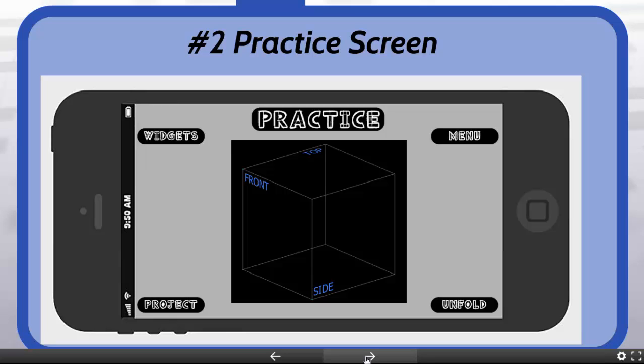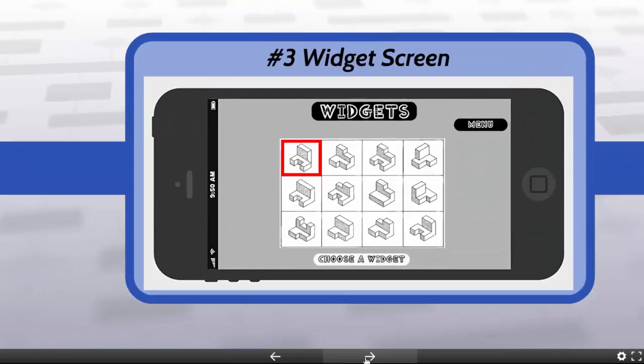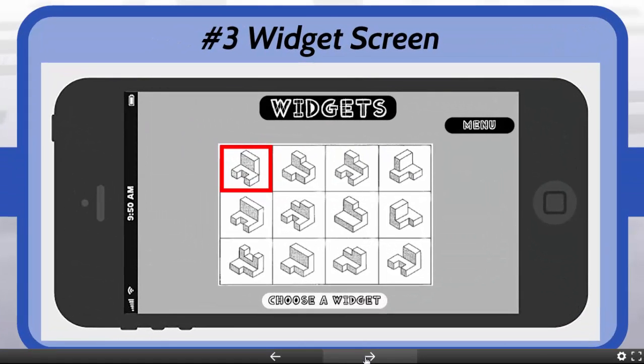After a student has chosen a widget from the widget's options, they'll be able to simply use their fingers and hold down on the screen to orbit around that widget in order to see the different views of each side of it. If they click the widget screen, they can pick a different model that they would like to orbit around.